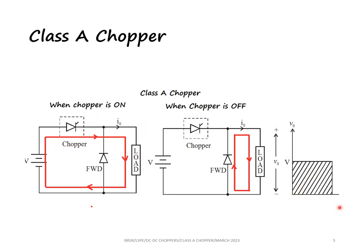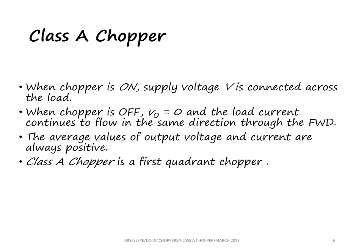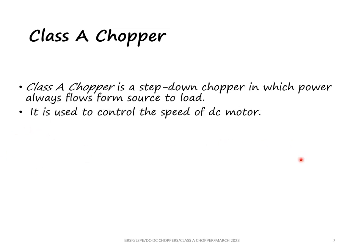This is the first quadrant chopper and it is also a one quadrant chopper. It operates in only one quadrant. This can be used to control the speed of a DC motor.